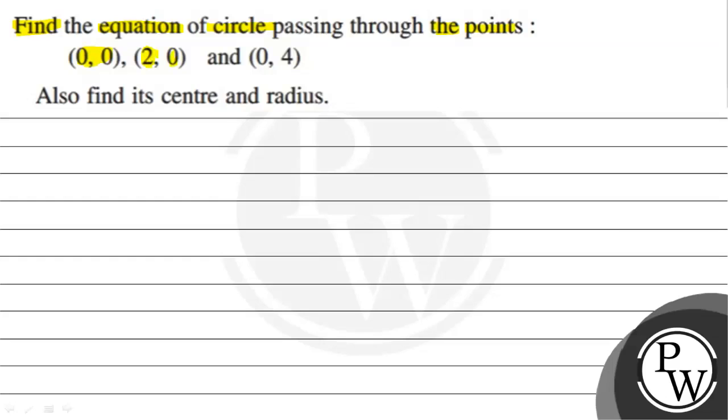(2,0) and (0,4), also find its center and radius. Key concept to solve this question is the general form of circle: x² + y² + 2gx + 2fy + c = 0, where the coefficients of x² and y² are 1.